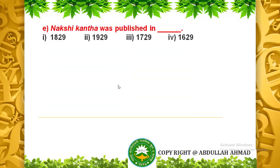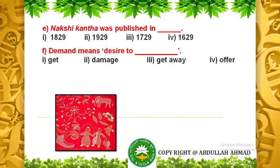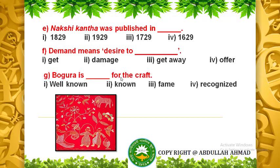Question E: Noxikatha was published in — 1829, 1929, 1729 or 1629? The correct answer is 1929. Question F: Demand means desire to — get, damage, get away or offer? The correct answer is get. Question G: Bogra is well-known for the craft. The options are well-known, known, fame and recognized. The correct answer is well-known.